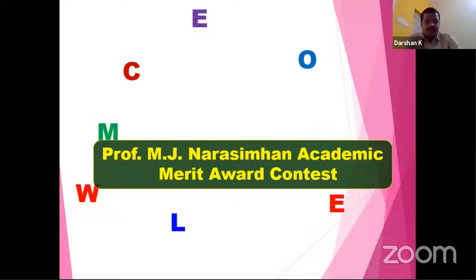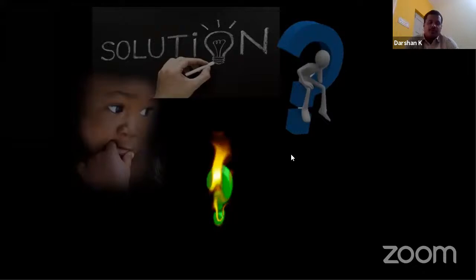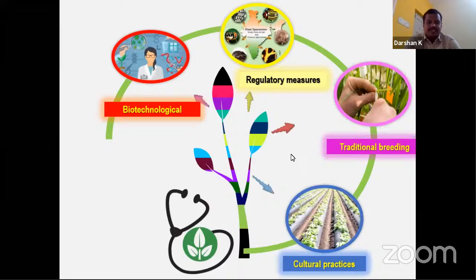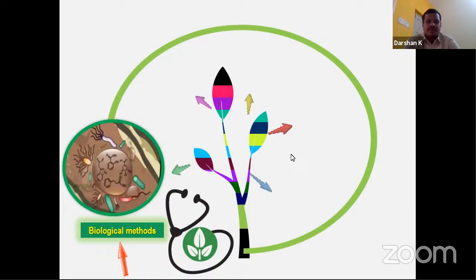With the use of chemicals being increasingly restricted, researchers have focused their efforts on developing alternative methods to synthetic chemicals for management of plant diseases. Among the different approaches, the biological control method is attracting the attention of scientists all over the world, as it is environmentally safe and biodegradable.